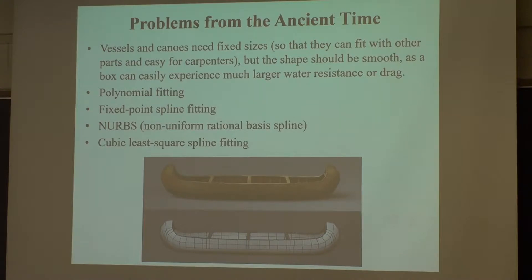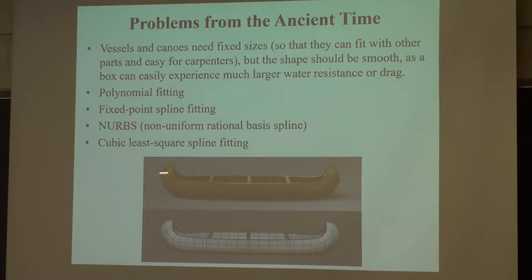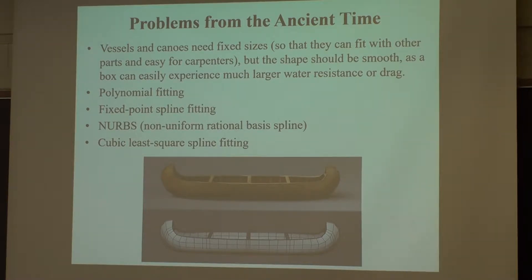I'll introduce to you in detail the fixed point spline fitting. Polynomial fitting is something I need anyway to construct the basis function, but I'll spend most of the time on fixed point spline fitting. I'll also talk a bit about least square spline fitting and the associated 3D representation called non-uniform rational basis spline — NURBS. NURBS is today's gold standard in mechanical design; in most animation you express surfaces in the NURBS format. But I won't spend too much time on the exact treatment in 3D, which is a bit more complicated — but you will learn everything in the fixed point spline fitting, giving you a good launching point to understand geometry optimization.